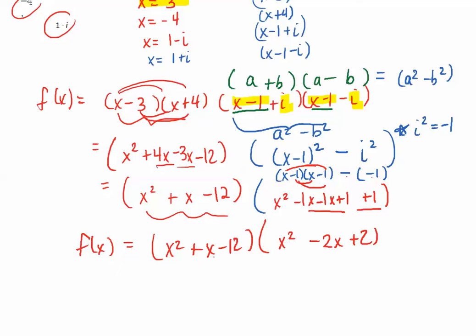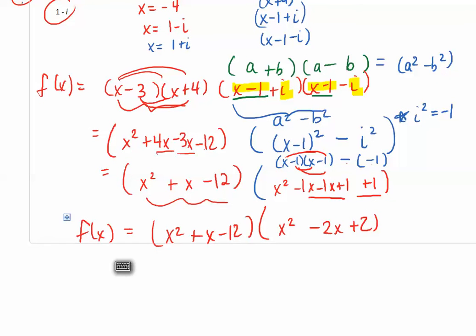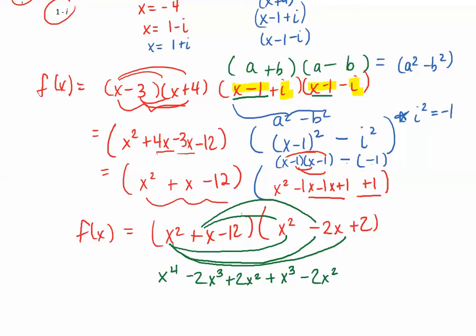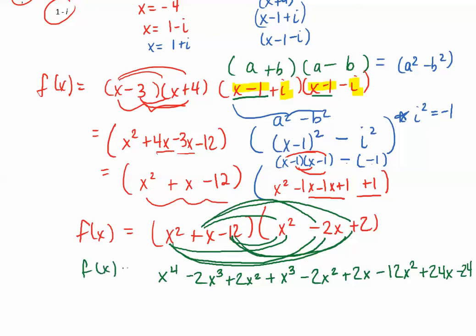Bringing down x squared plus x minus 12 and our complex result x squared minus 2x plus 2, this is our polynomial — almost done. Now I need to do triple distribution. x squared times x squared is x to the fourth; x squared times negative 2x is negative 2x cubed; x squared times 2 is positive 2x squared; positive x times x squared is positive x cubed; positive x times negative 2x is negative 2x squared; positive x times 2 is positive 2x; negative 12 times x squared is negative 12x squared; negative 12 times 2 is negative 24.